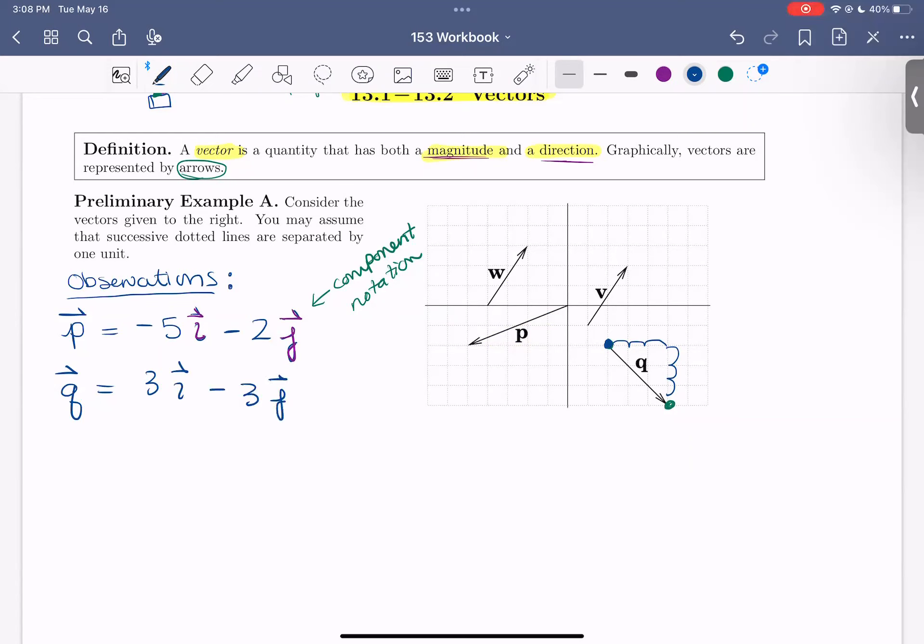So go ahead, pause the video and compute the components for V. Then check your work. All right. So looking together, we start here and here. So we're going to move 1, 2 to the right, 1, 2, 3 up, which would mean that V is equal to 2i plus 3j.